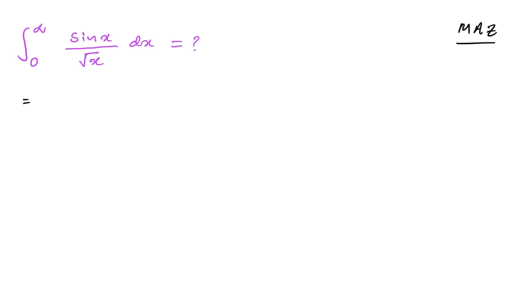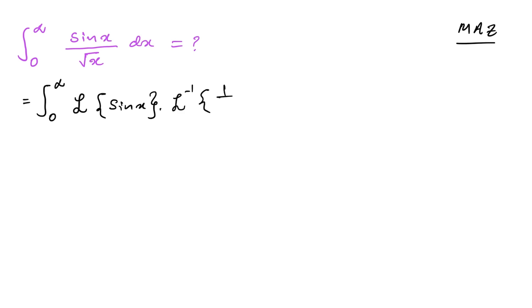We know that if we have this type of integral — a product of two functions with limits 0 to infinity — we can take the Laplace transform of the first function, sine of x, and multiply by the inverse Laplace transform of the second function. Here we have 1 over square root of x, and we know the Laplace transform of sin(x) is equal to 1 over (1 + s²).